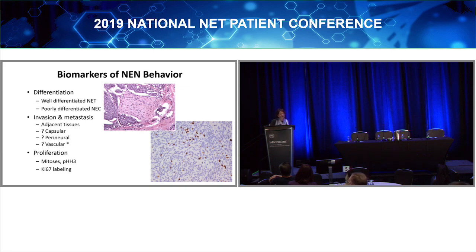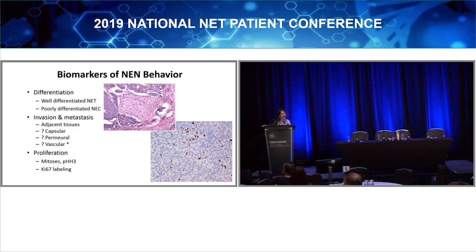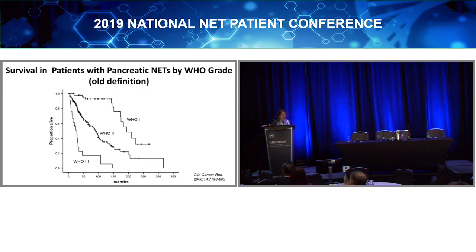We want to know how fast this tumor is going to grow, because that helps clinicians monitor your progress and decide on the right treatment. For that, we look for mitoses — dividing tumor cells — or KI-67 labeling. You're all going to hear about that, and the KI-67 proliferation index is what the pathologist has to define.